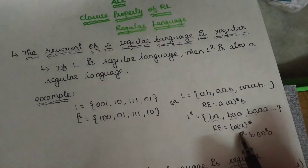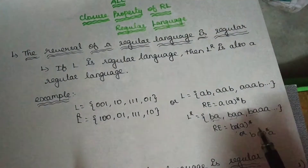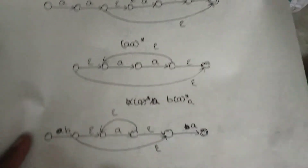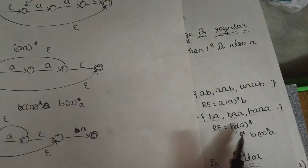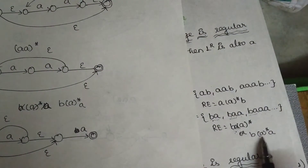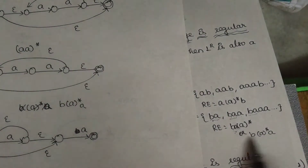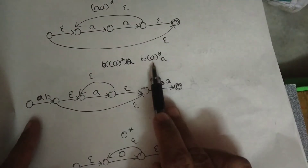Now this is regular expressions — the finite automata accepts, and then you can say that this is a regular language. You can say b, a star, a. You can say b, a, a star, and then you can say b, a star, a. So this is regular expressions. You can say a star, first bracket.